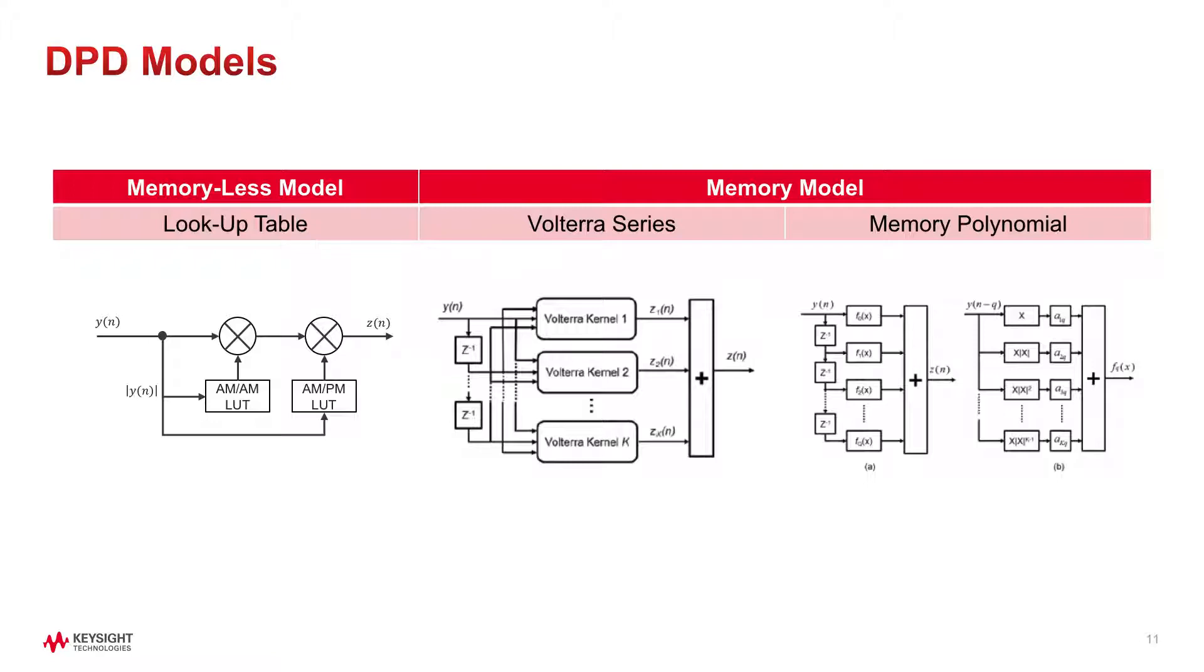Volterra series is the most general memory model, but it's computationally intensive, while memory polynomial model is focused on special cases and it's more efficient. In contrast, LUT only looks at the instantaneous response, hence it's called memoryless models.